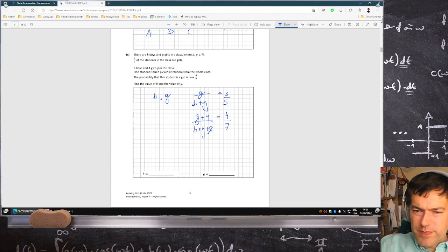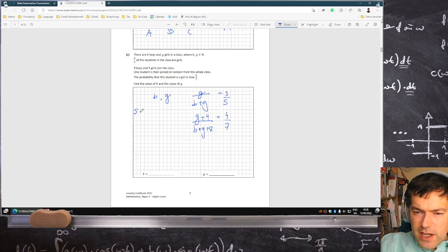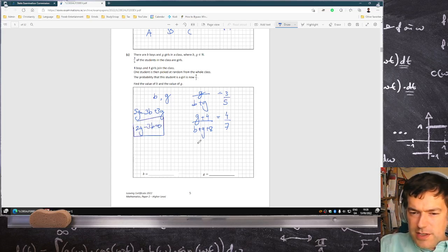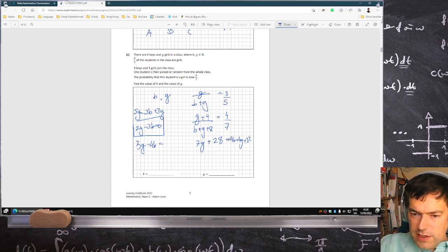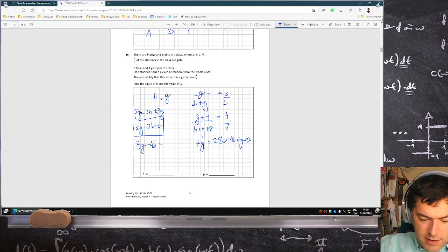So it's a simultaneous problem. If you cross multiply you get 5g equals 3b plus 3g, so that's 2g minus 3b equals zero. That's one equation. And then crossing here, that's 7g plus 28 equals 4b plus 4g plus 32, so that's 7g minus 4g is 3g minus 4b. Seven minus four is three, take the four to the left, and then 32 minus 28 is 4. So that's my two equations that I just have to solve.